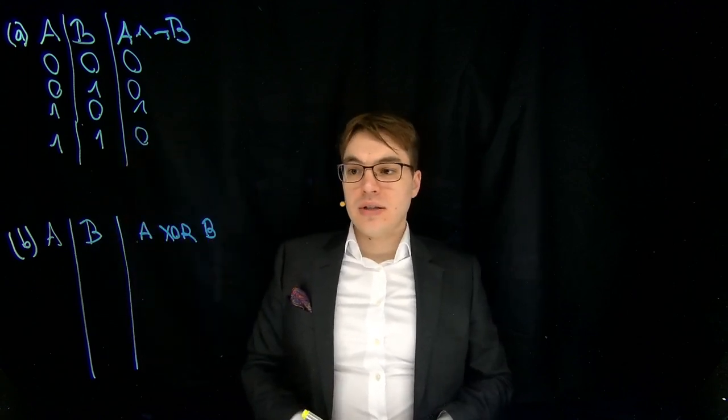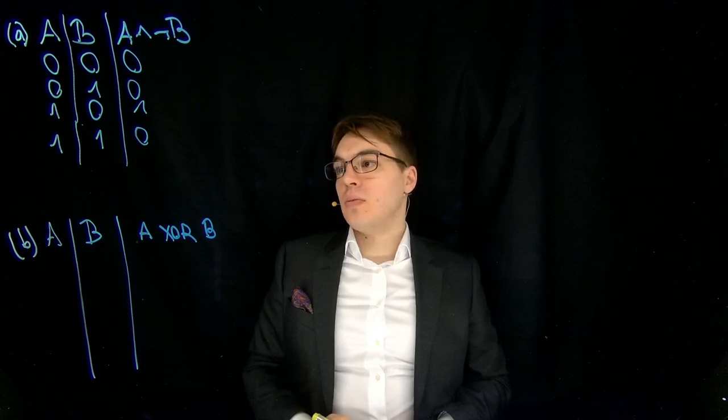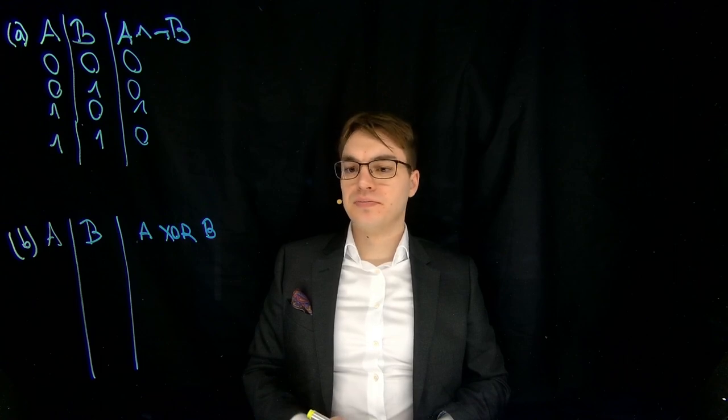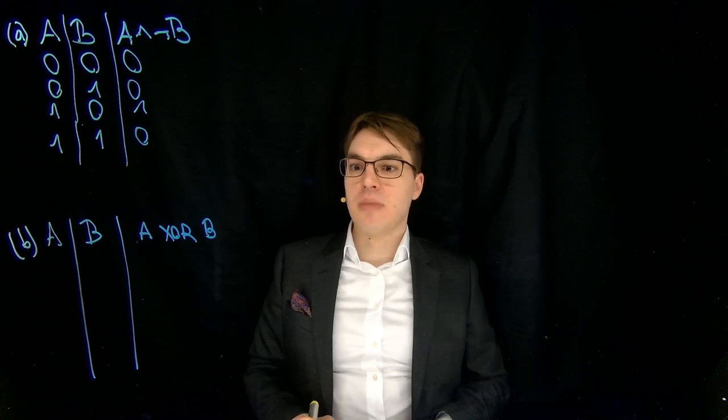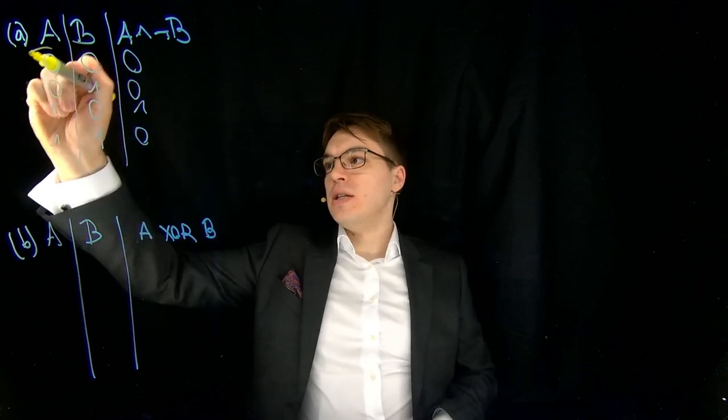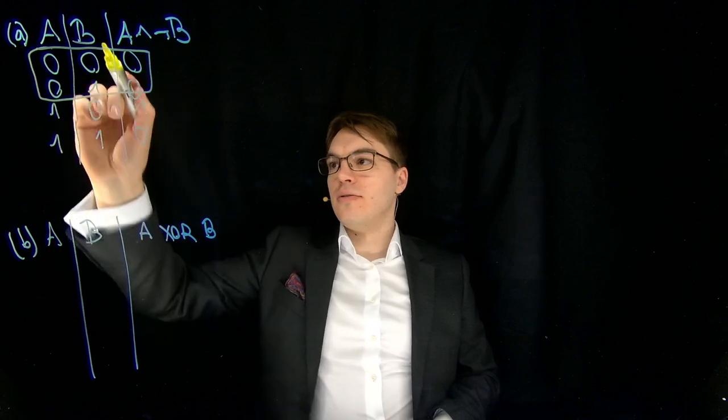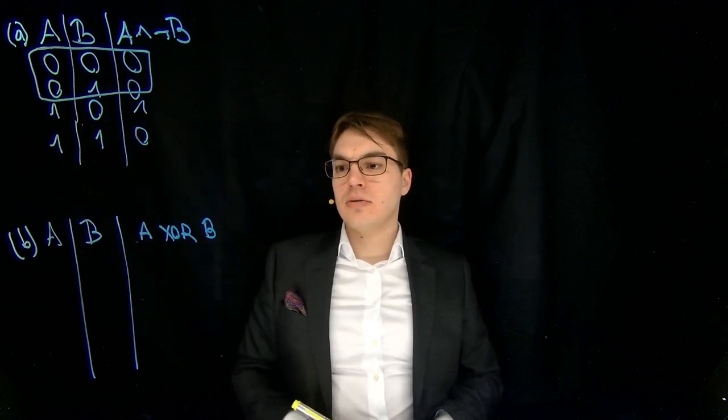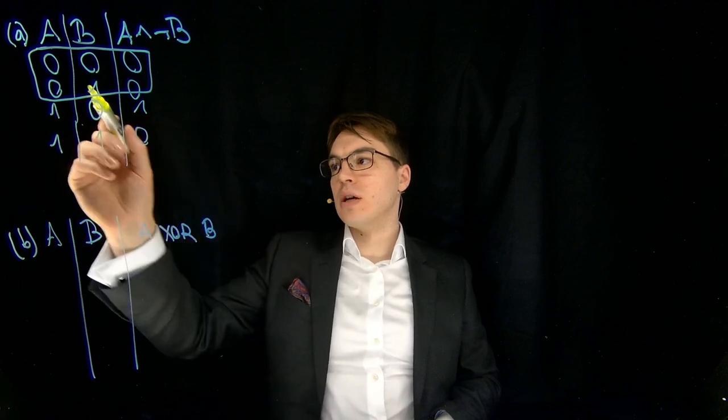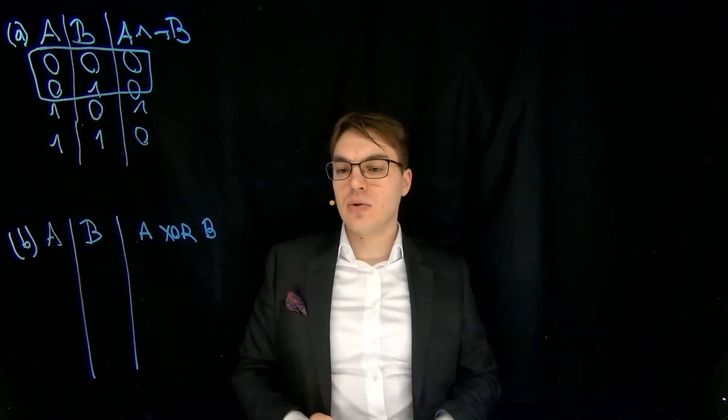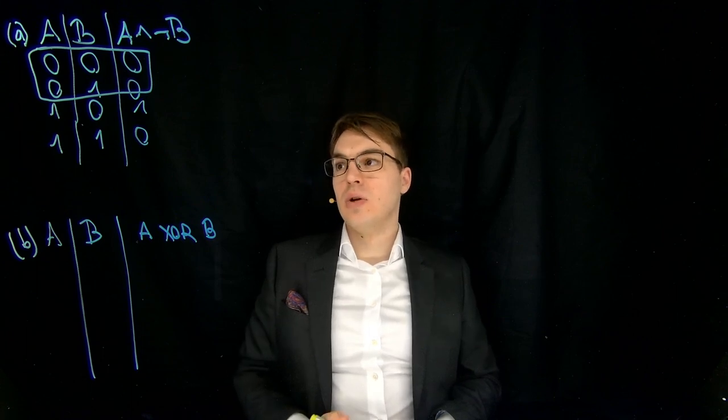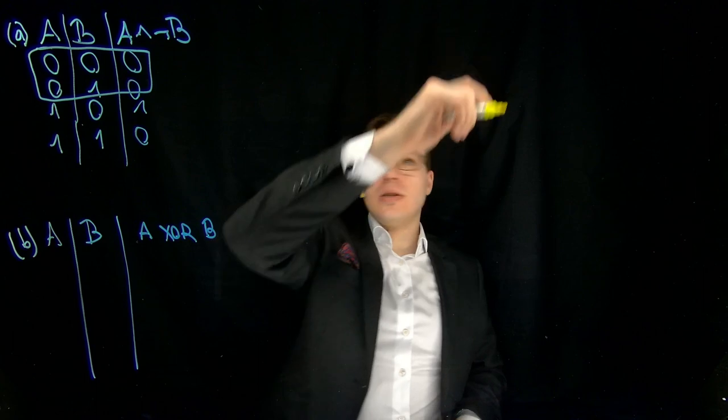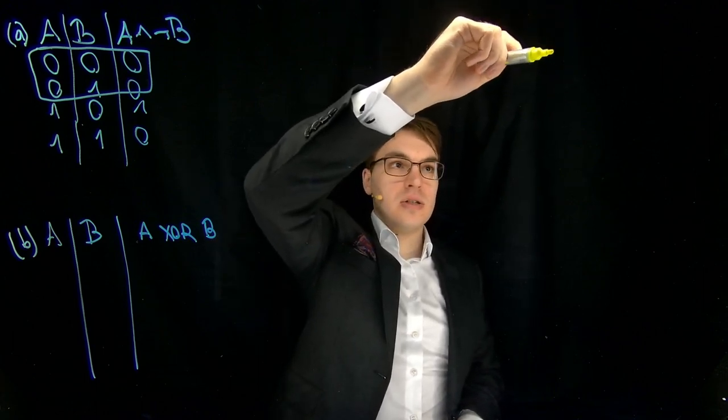And now if you want to write this as a decision tree, one nice idea that you could try is to look for points in this table where some value doesn't matter. So for example here, the value of B has no effect on the output because if there is 0 in the value of A, it doesn't matter what B says, we always get 0. And this is what we can use to construct our decision tree.